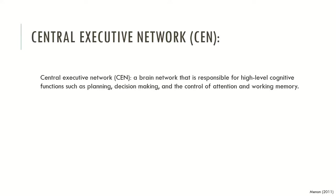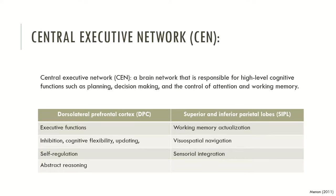The central executive network is a brain network responsible for high-level cognitive functions such as planning, decision-making, and control of attention and working memory. This network can be conceptualized through several functions associated with neural structures. The dorsal prefrontal cortex is typically associated with self-regulation and abstract reasoning. The superior and inferior parietal areas have implications in working memory, visual and spatial navigation, and sensorial integration — which is why this network is called the central executive network.